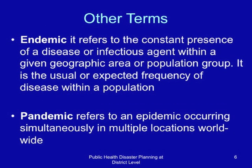What are terms related to epidemics? Endemic refers to the constant presence of a disease or infectious agent within a given geographic area or population group — it is the usual or expected frequency of disease in a population. Pandemic, on the other hand, refers to an epidemic occurring simultaneously in multiple locations worldwide.